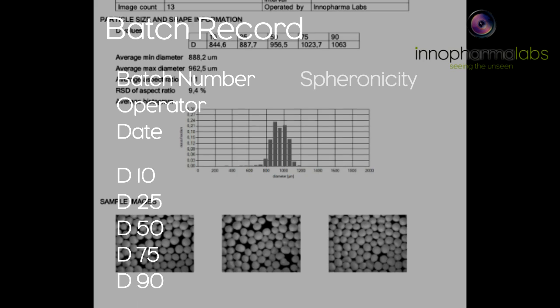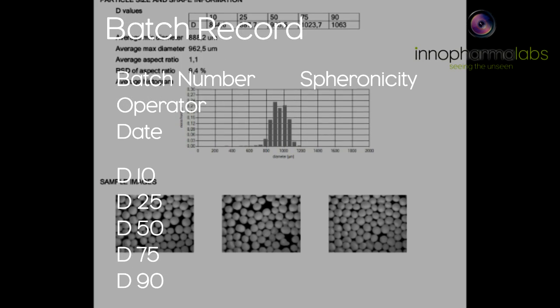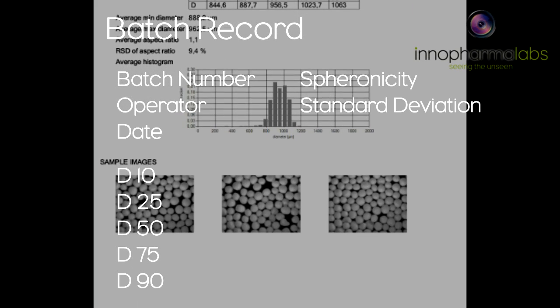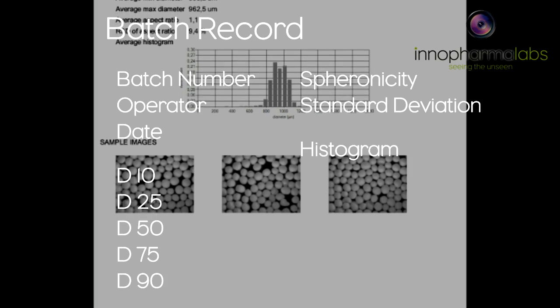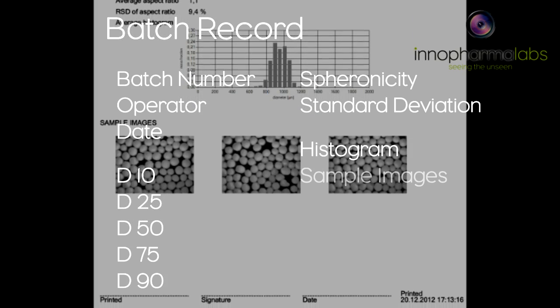The average spheronicity of the particles along with their standard deviation, a copy of the mass fraction histogram, and representative sample images from the run.